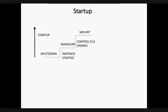The next stage is the mount stage. We mount the database for various tasks like renaming data files, enabling and disabling redo log archiving options, and performing full database recovery. In this stage, the database is associated with the previously started instance. The control file specified in the parameter file is located and opened. Then the control file is read to obtain the names and status of the data files and the redo log files.